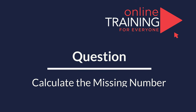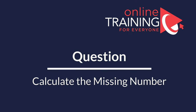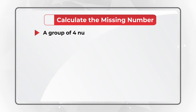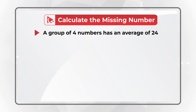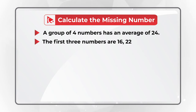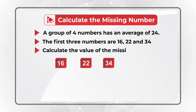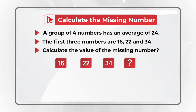Here's one of my favorite questions where you need to do mental math calculations. You are presented with a group of four numbers, and this group has an average of 24. The first three numbers are 16, 22, and 34. You need to calculate the value of the missing number, which is represented as the question mark.